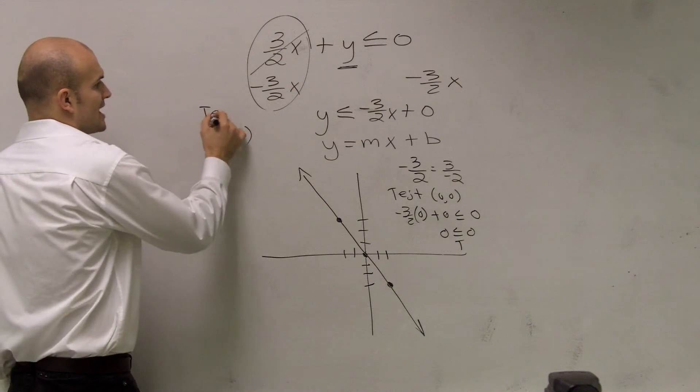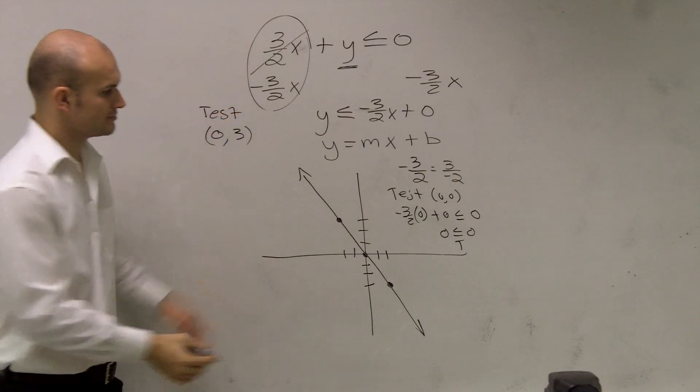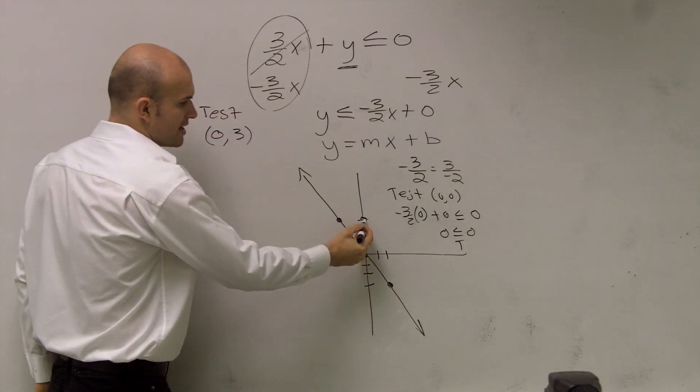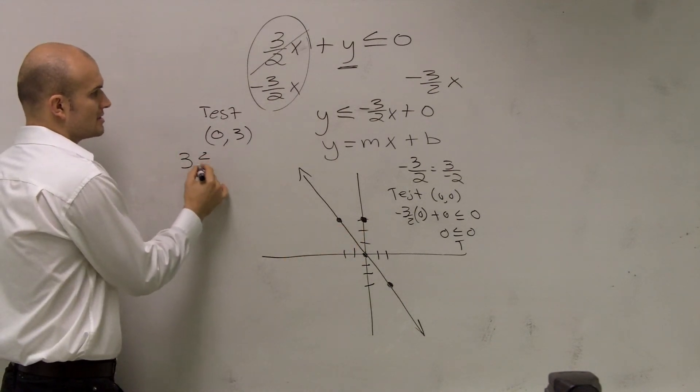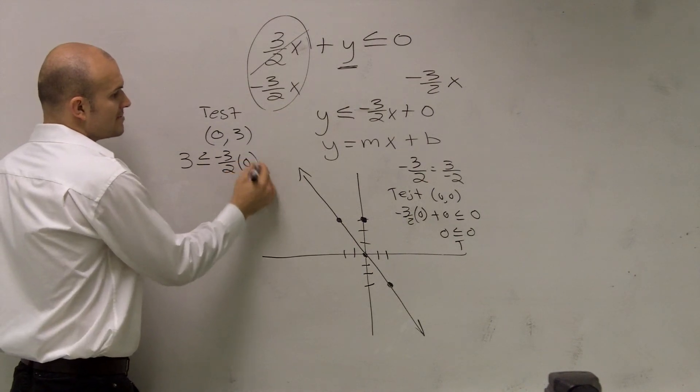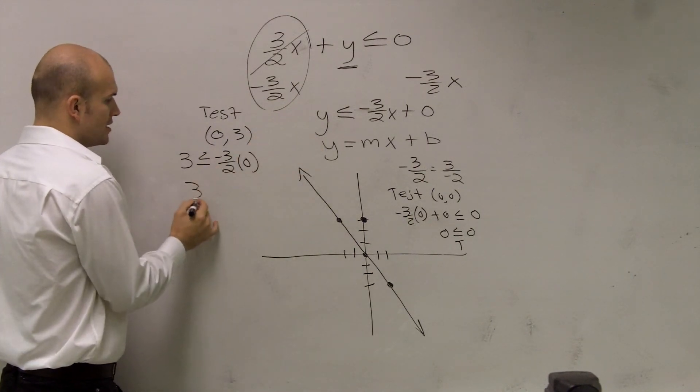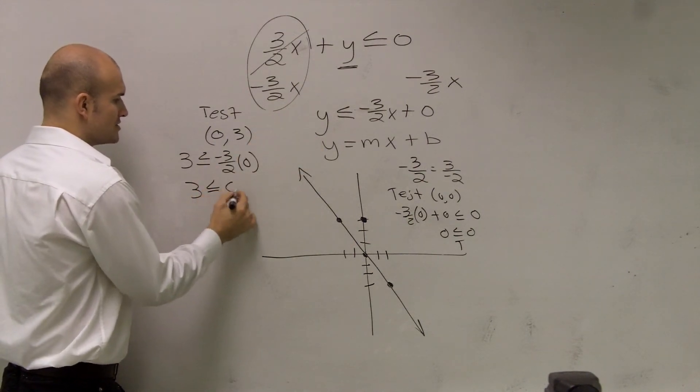So let's pick the point 0, 3. I'm going to test 0, 3. So 0, 3 is going to be right here. So I plug in 3 for y, is less than or equal to negative 3 halves times 0. We don't need to write the 0.